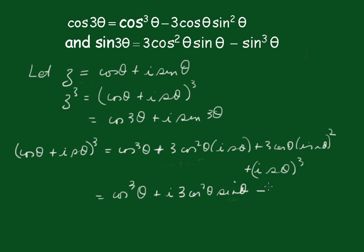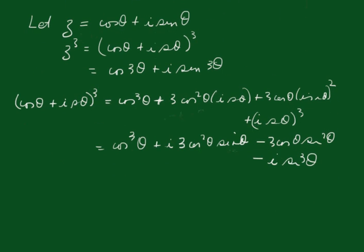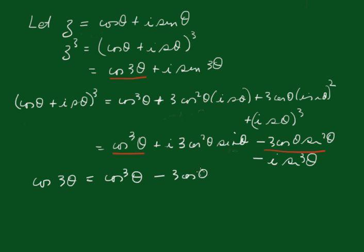This becomes cos³θ + 3i cos²θ sinθ − 3cosθ sin²θ − i sin³θ. Now on equating the real and the imaginary parts, the real part gives us cos3θ equals cos³θ minus 3cosθ sin²θ.